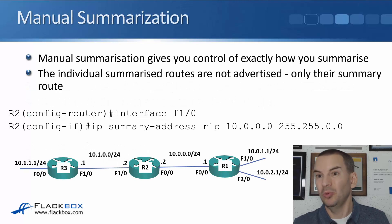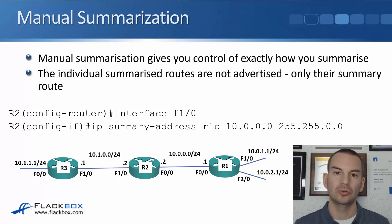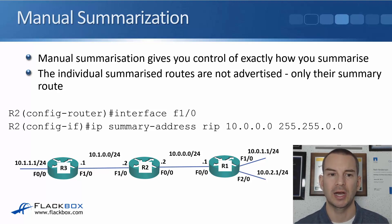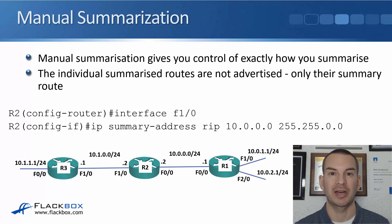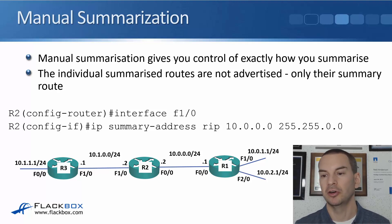We don't want automatic summarization, but we probably still want to do summarization manually. The command for that is 'ip summary-address'. This gives us control over exactly how we are summarizing. When we do this, the individual summarized routes that fall within the larger range are not advertised — only the summary route. So neighbor routers only learn the summary route, making it more efficient and using less memory.